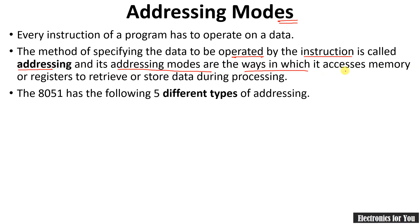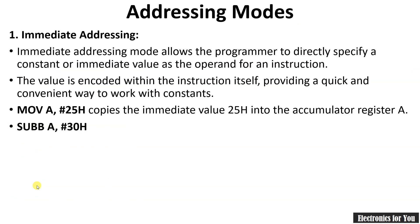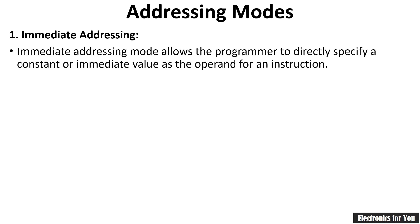Addressing modes are the ways in which we access the memory, register, or data to perform the specified operations. The 8051 has the following seven different addressing modes: immediate addressing, register addressing, direct addressing, indirect addressing, index addressing, bit addressing, and absolute addressing. Let us see them one by one.